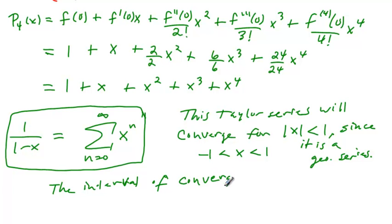is negative 1, comma 1, with parentheses to show it's an open interval. This is effectively the same thing as the domain of the function when it's written as a power series. We're going to talk a lot more about that in class, and in the next couple of examples.